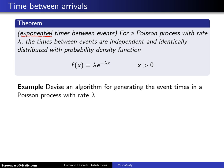Here is the setting: for a Poisson process with rate lambda, the times between events are independent and identically distributed with probability density function f(x) = λe^(-λx) on the support x > 0. This particular distribution is known as the exponential distribution.